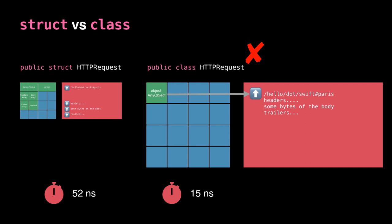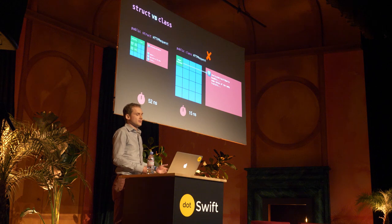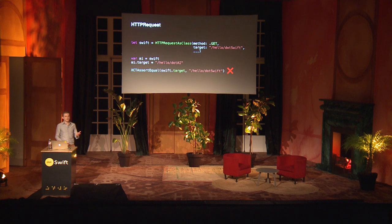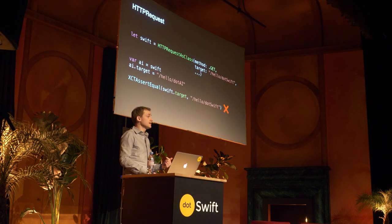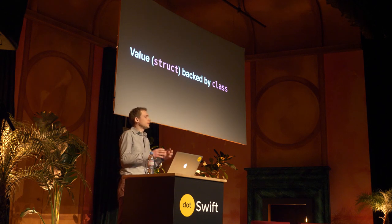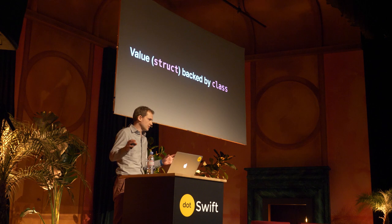You can see how the argument goes — we've done a benchmark, it must be the truth. But it's not quite. Why do we not want HTTP request as a class? Because it's a value type and should have value semantics. If we implement it as a class to pass it around faster, we lose value semantics. In this case, even with two variables (AI and Swift), they share the same class reference. So if I change the target of AI, I unfortunately also change the target of Swift — which is not what we want. That introduces threading problems and a lot of complexity. What we really want is value semantics but with the performance of the class.